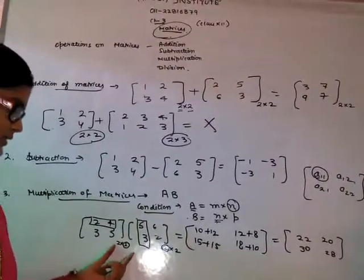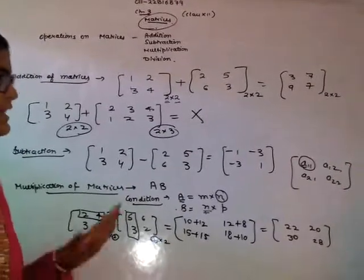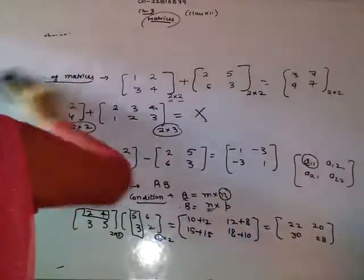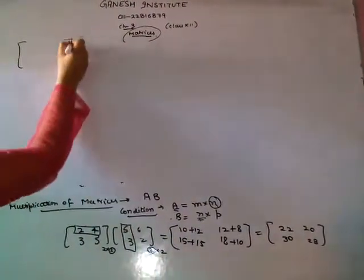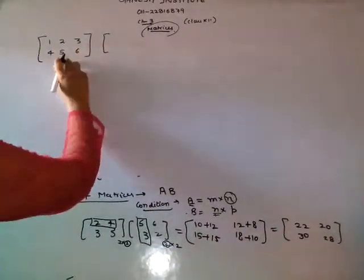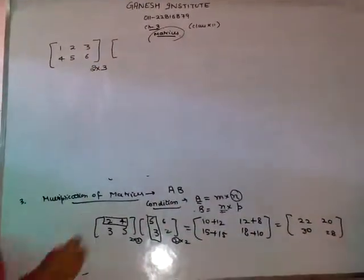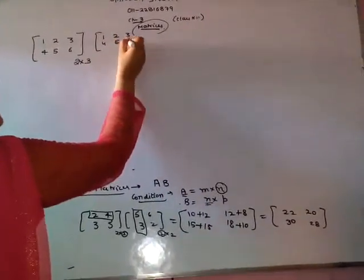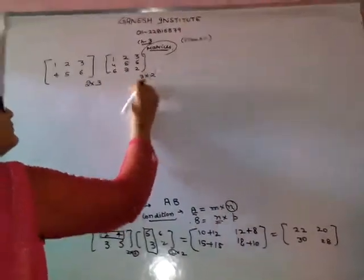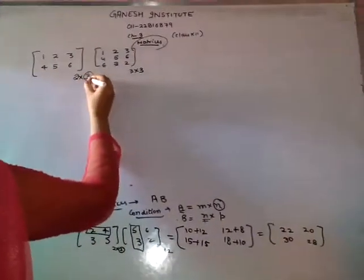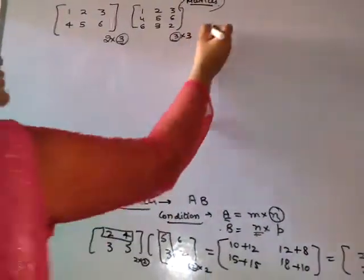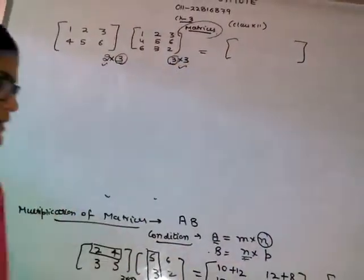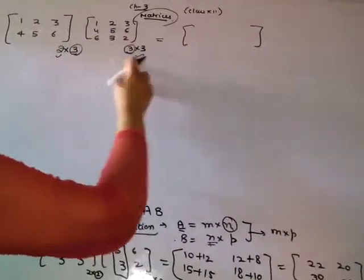Now, here the example is that order of both matrices are the same. Now take an example of that matrix whose order is not same. The order of this matrix is 2 rows, 3 columns. So this is 2 by 3. This is 3 by 2, 3 by 3. 3 rows, 3 columns. What we see here is that the condition for matrix is that the column of first matrix must be equal to the row of second matrix, which is applied here. So the matrix which is formed now is of order n by p, that means 2 by 3.